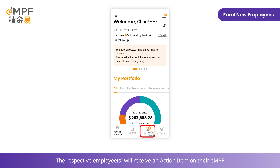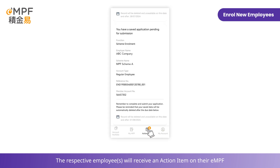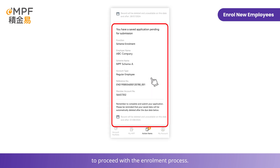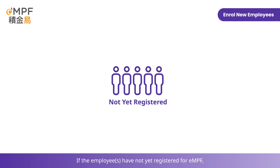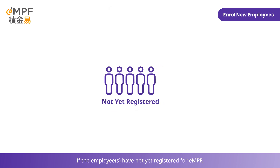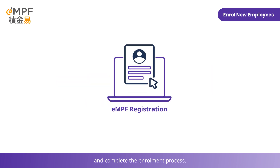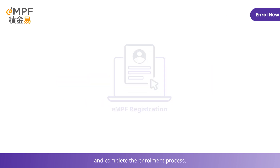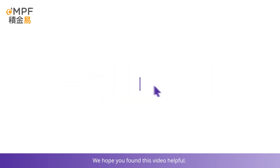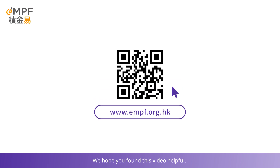Read the terms and conditions and click 'Accept'. The enrollment request has been successfully submitted. The respective employees will receive an action item on their MPF to proceed with the enrollment process. If the employees have not yet registered for MPF, they will receive an email notification to register for MPF, and then they can complete the enrollment process.